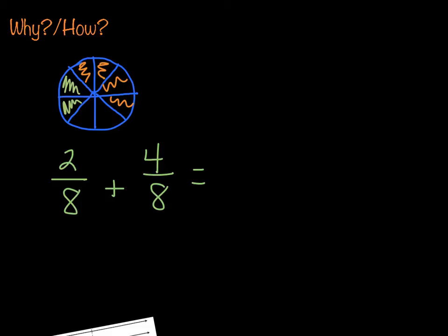Hopefully you're figuring out a strategy here. My two plus four is equal to six, and my eight remains an eight. So my answer would be six-eighths.